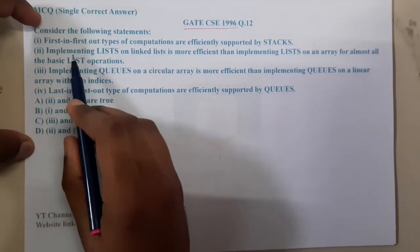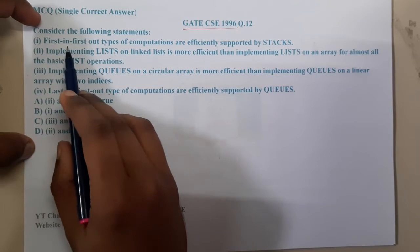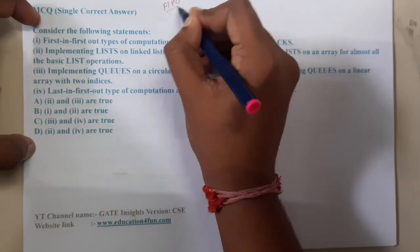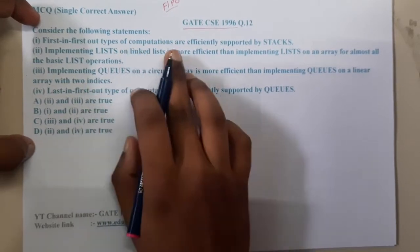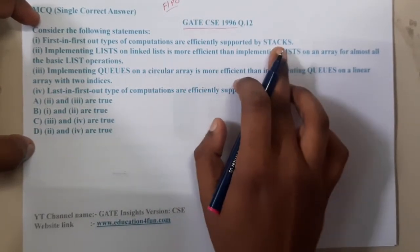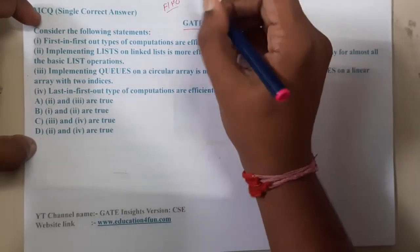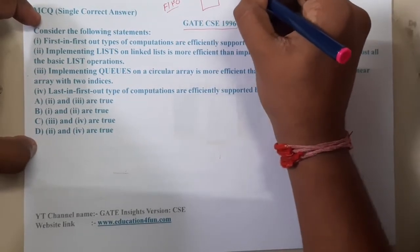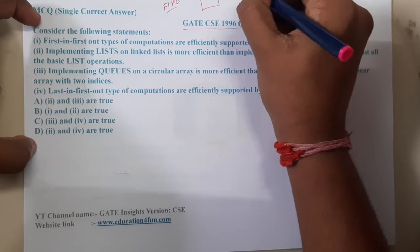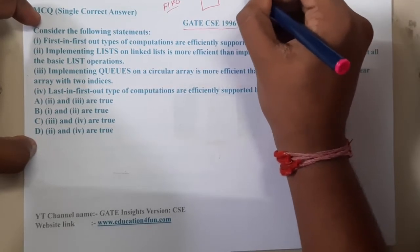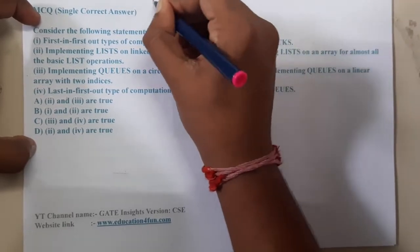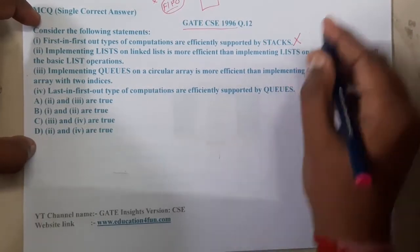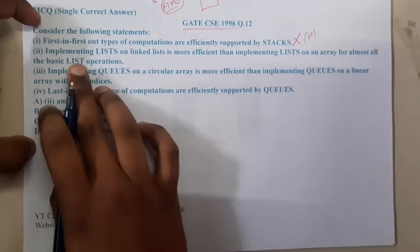The first statement says: First-in-first-out (FIFO) type of computations are efficiently supported by stacks. This is wrong, because a stack follows Last-In-First-Out (LIFO), not FIFO. So the first statement is absolutely false.